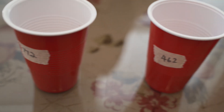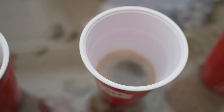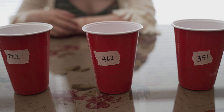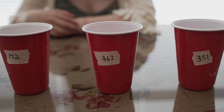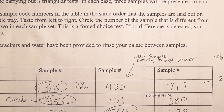In triangle tests, we want to see if there's a detectable difference between two samples. Assessors receive three coded samples and are told that two are the same and one is different. Using their senses, they need to identify which sample is the odd one out. In general, you should have 20 to 40 people do this test, since there's a one in three chance of choosing the right one. We'll also need statistical tables to determine how many correct responses are needed to confirm a statistically significant difference. Assessors shouldn't be allowed to answer that there's no difference — we should force them to make a decision.